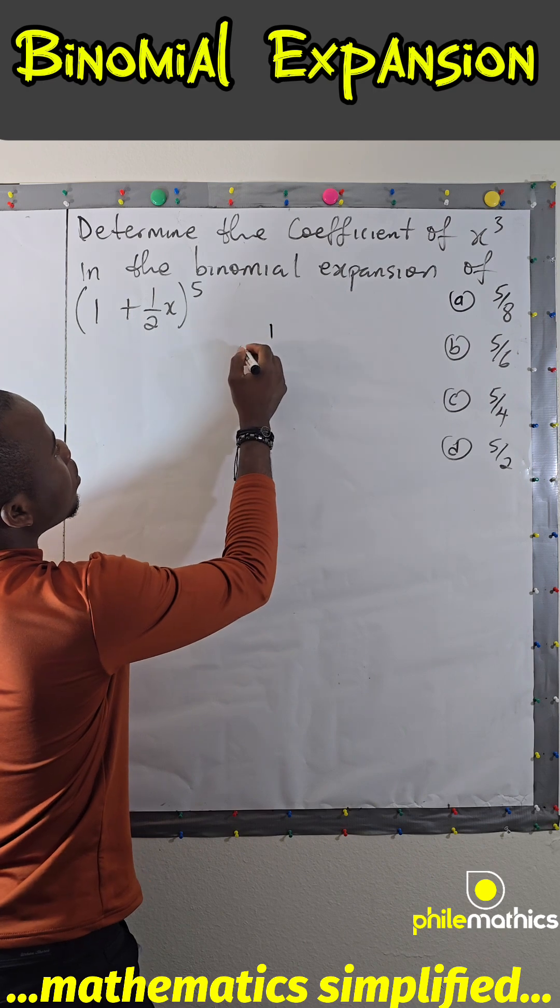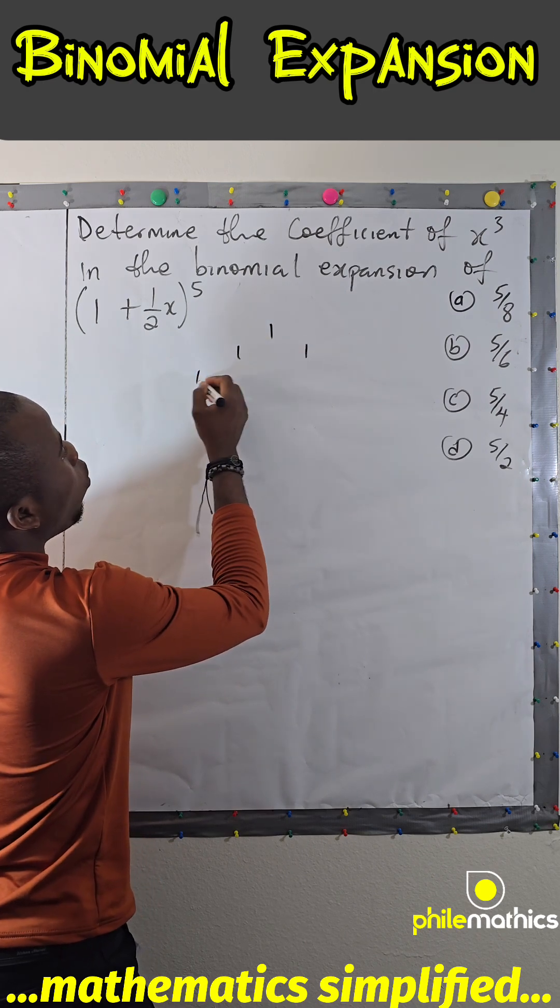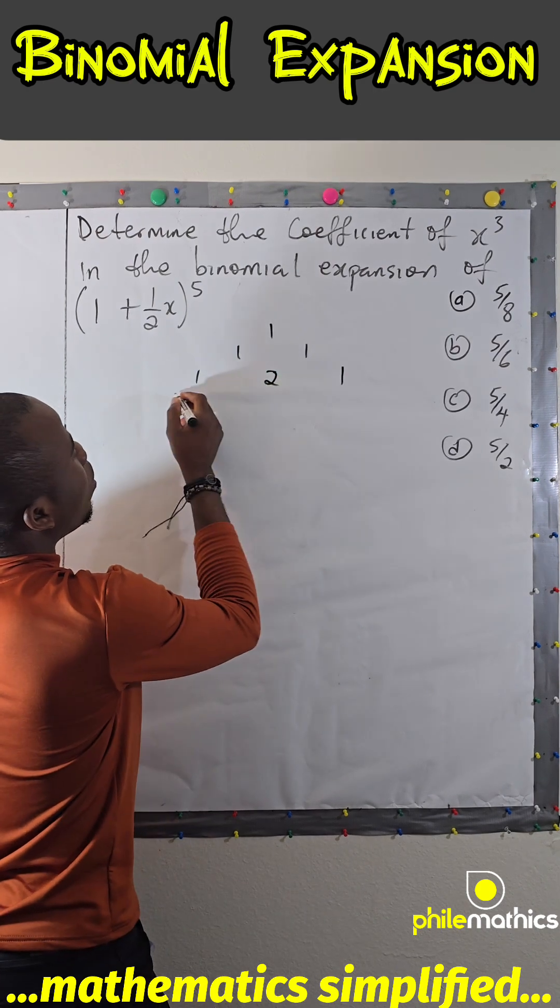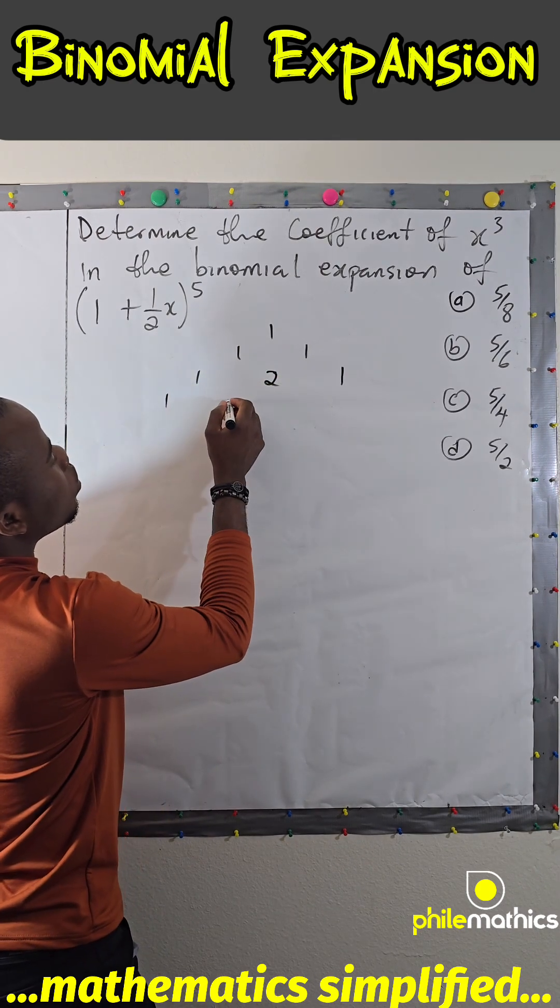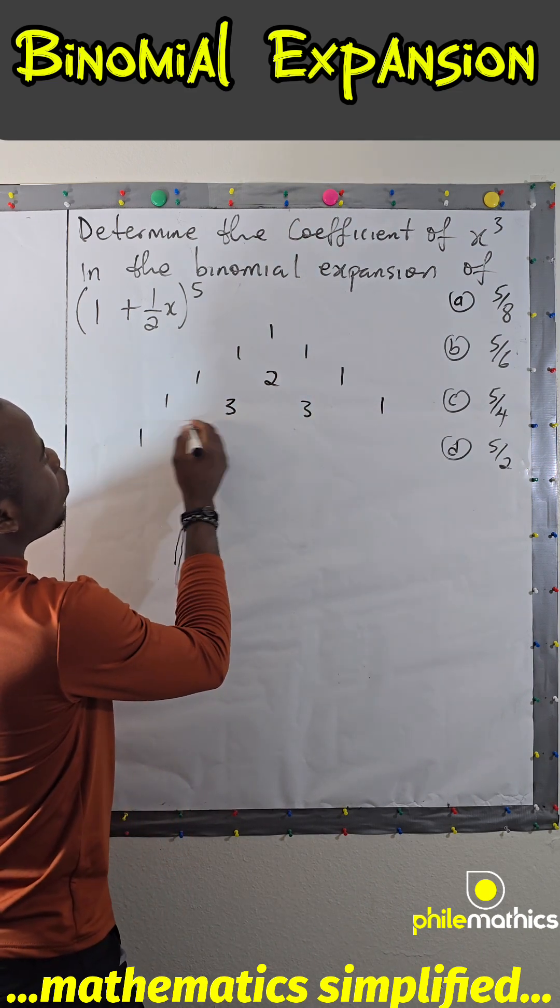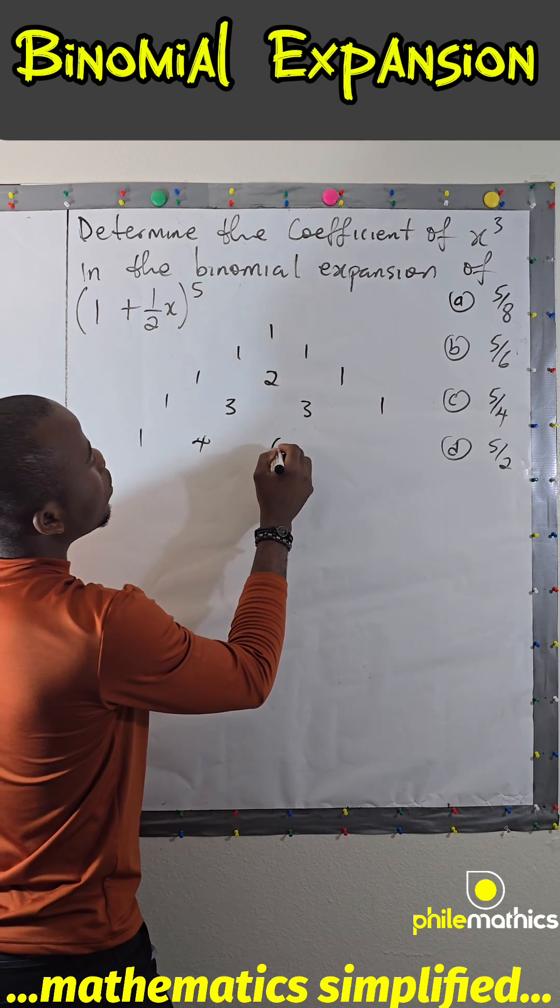From Pascal's triangle we know that if we have 1, 1, 1, then to be at the end you have to add the middle is 1, 2, 1. Then 1, 1 plus 2 gives 3, 3, 1. Then 1, 4, 6, 4, 1.